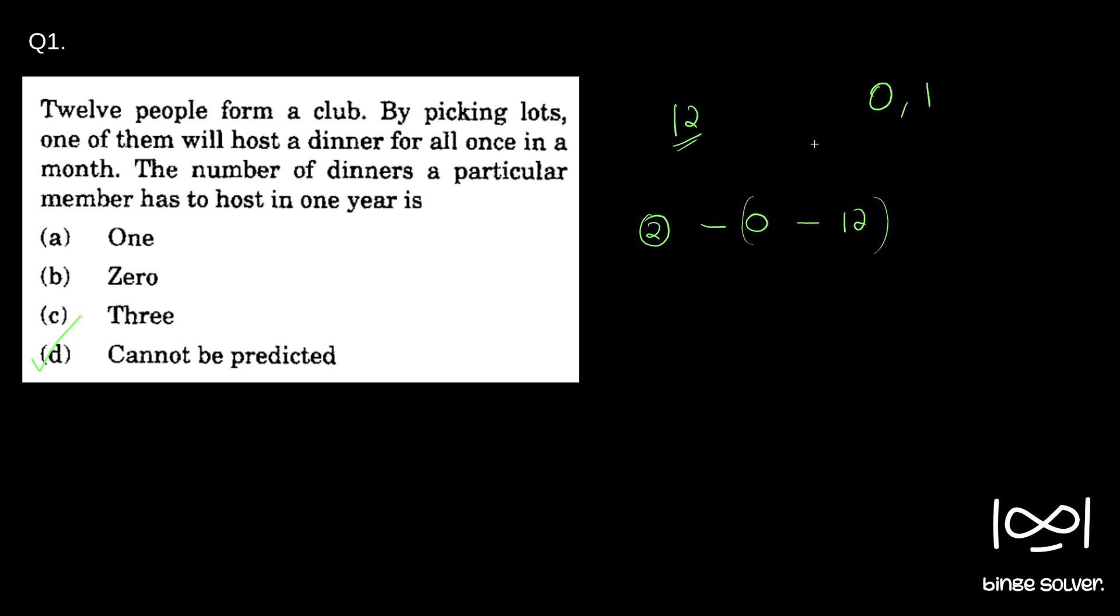So no such condition is given, so it could be from 0 to 12. Any possibility, any number could be the number of dinners a particular member has to host. That's the solution to question 1: d.